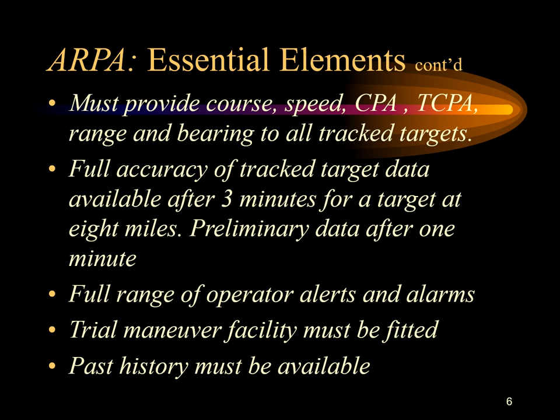The ARPA should provide course, speed, CPA, TCPA, range, and bearing on any tracked target. Full accuracy of tracked target data should be available after 3 minutes for a target at 8 miles, with preliminary data available after 1 minute. A full range of operator alarms should be fitted, including collision threat, lost target, and guard zone or minimum range. It should also have a trial maneuver facility and past track history on all tracked targets.